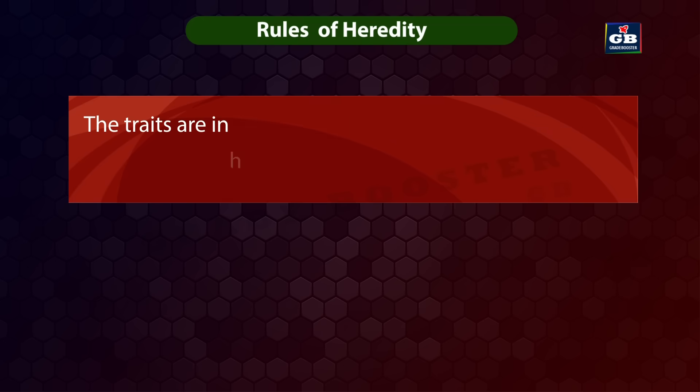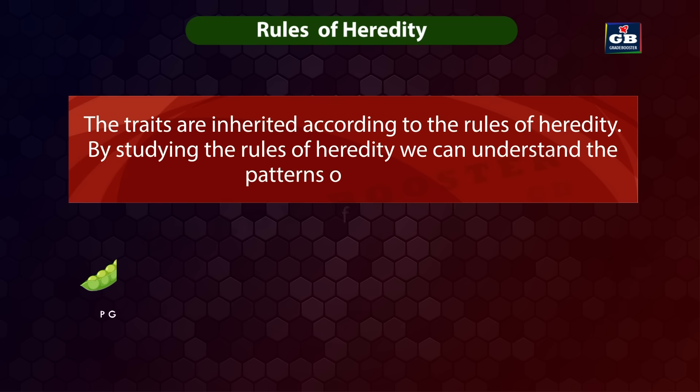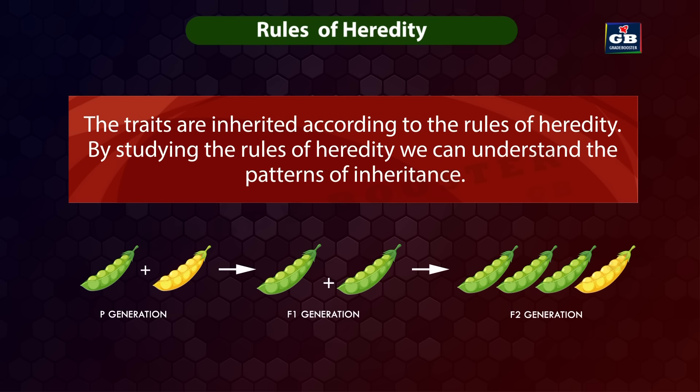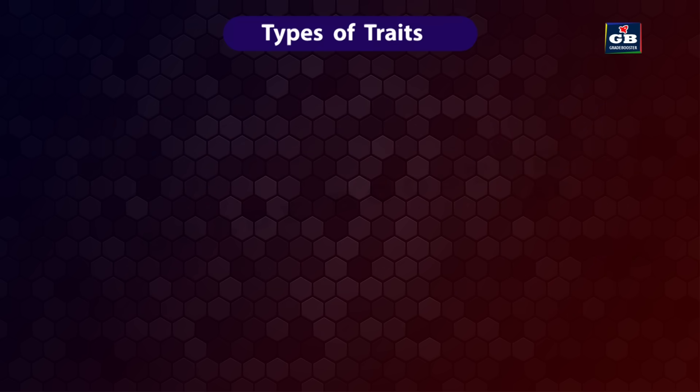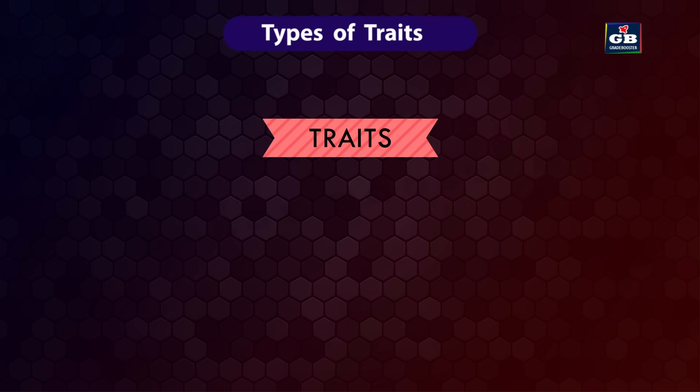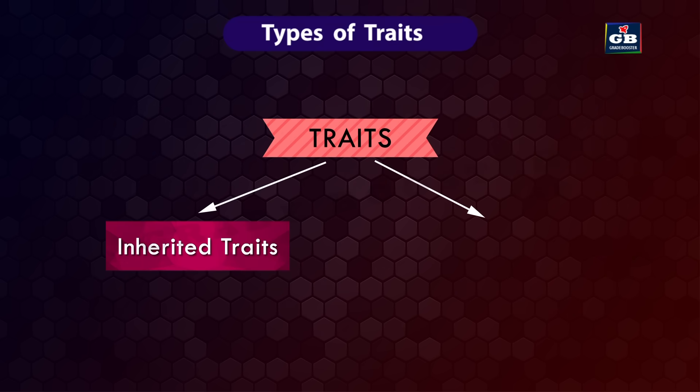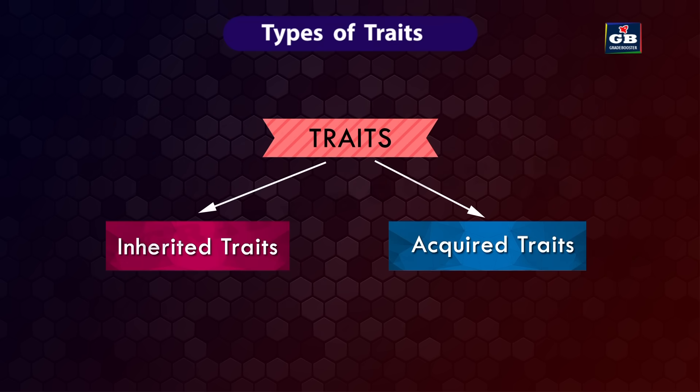The traits are inherited according to the rules of heredity. By studying the rules of heredity, we can understand the patterns of inheritance. Traits are of two types: inherited traits and acquired traits.